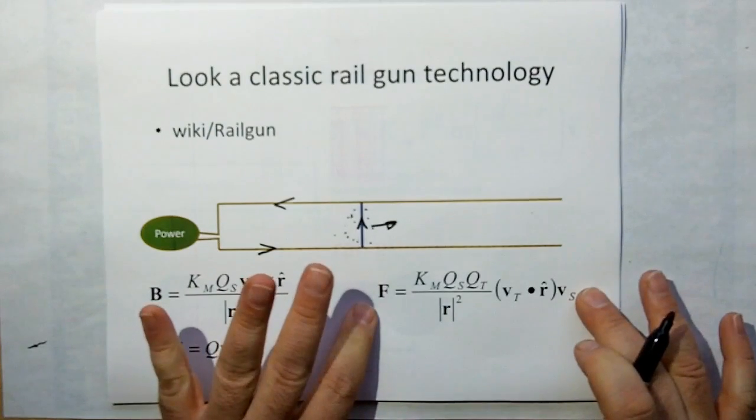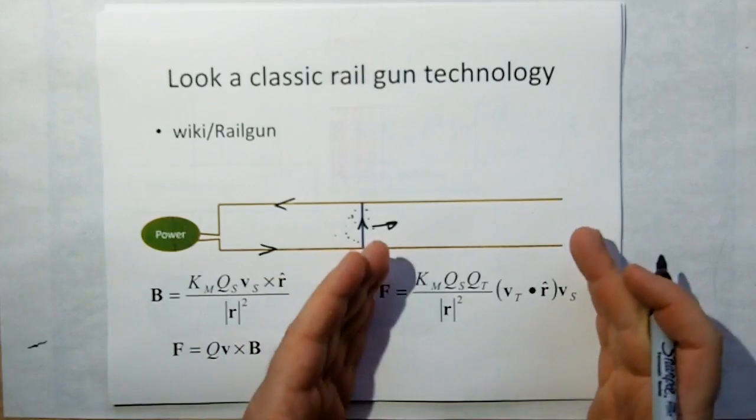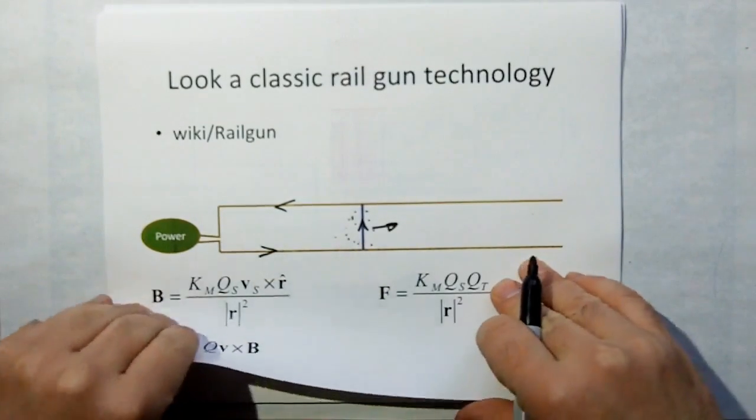And this is the way you would compute it using new electromagnetism. This is a two-step process. This is a one-step process. It's much easier.